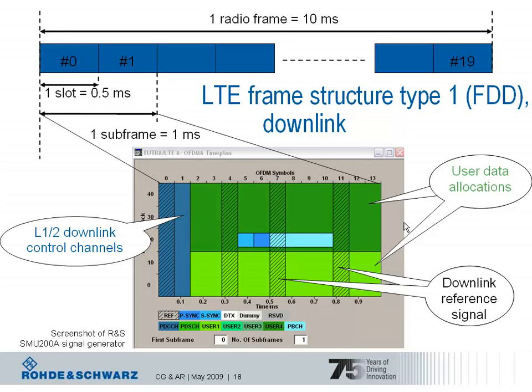What is the content of each subframe? At the beginning of each subframe there are certain control channels — layer 1 and layer 2 downlink control channels — which carry information about the scheduling decisions for the different UEs in a cell. The UE first reads these downlink control channels to get information about whether there are resource assignments with user data inside the upcoming subframe.